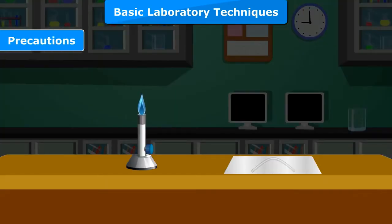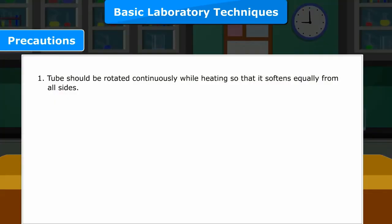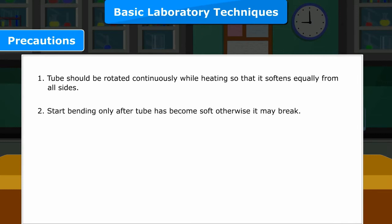Precautions: 1. Tube should be rotated continuously while heating so that it softens equally from all sides. 2. Start bending only after the tube has become soft, otherwise it may break.